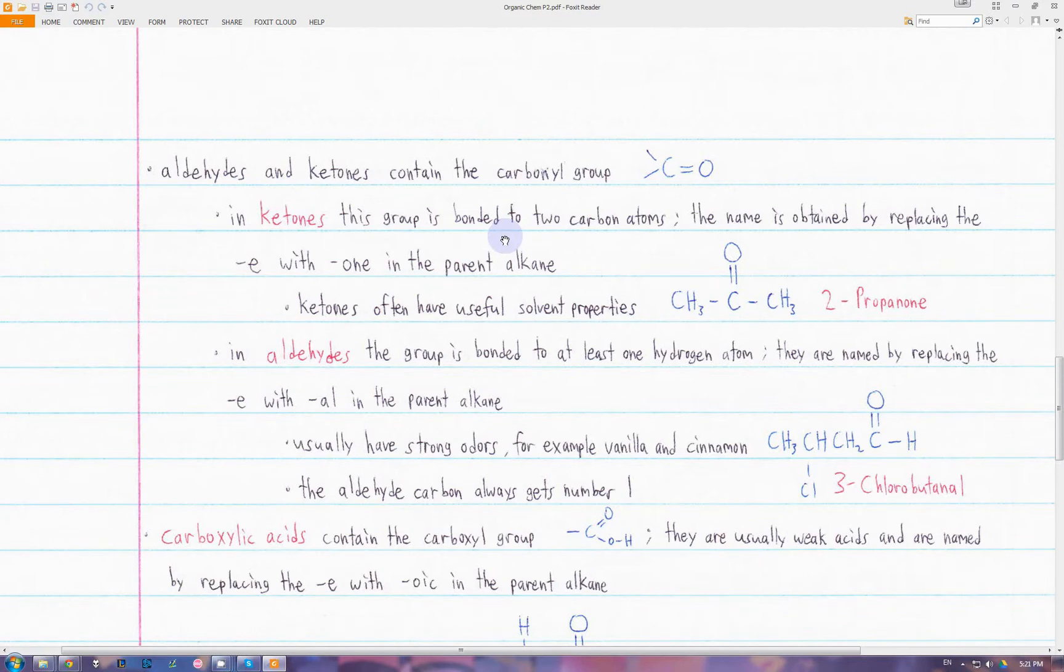The next class of molecules are the aldehydes and ketones, which both contain the carbonyl group, a carbon bonded to two things which may be hydrocarbon fragments, and then double-bonded to an oxygen. In ketones, this carbonyl group is bonded to two carbon atoms. There's a carbon here and a carbon here. To name the ketones, we replace the E in the alkane with O-N-E.